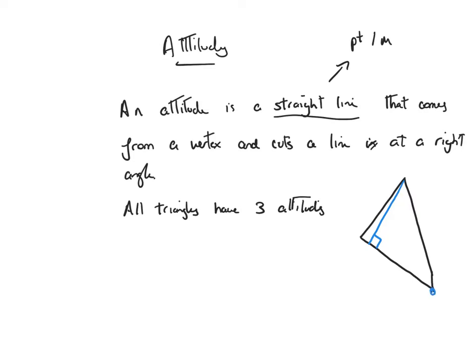The altitude from the second vertex comes from the corner and cuts at a right angle. And then the altitude from the third vertex also comes from the corner and cuts at a right angle. Importantly, altitudes have nothing to do with midpoints — it's simply that each comes from a vertex and cuts the opposite line at a right angle. So all triangles have three altitudes. To find the equation of an altitude we need a point that lies on the line and the gradient of the line.